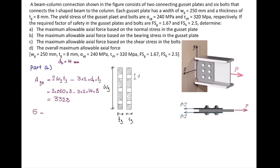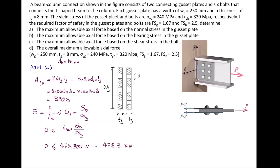If you are rusty on this definition, I highly recommend watching the previously provided video where we discussed bearing stress, normal stress, and how to calculate them in these types of problems. After determining the area, stress is force divided by area, and that has to be smaller than the allowable stress. The allowable stress in the gusset plate equals the yield stress of the gusset plate divided by the factor of safety. Solving for P after plugging in the values, the answer is 478.3 kilonewtons.